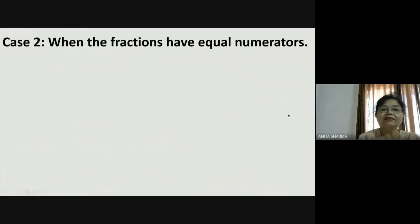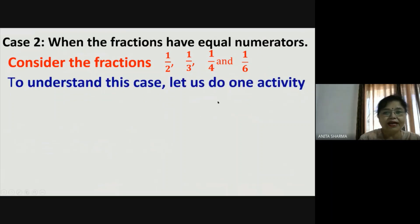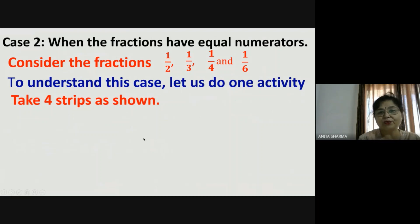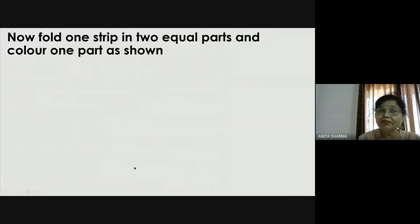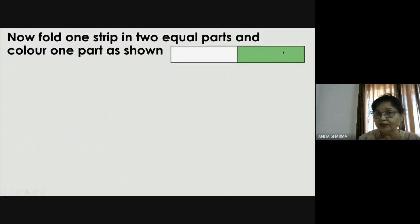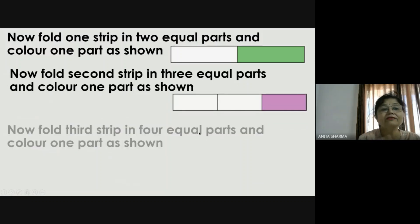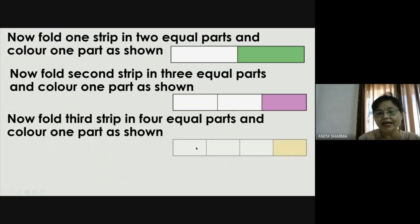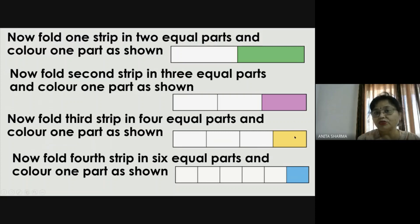Now let us understand case two — when fractions have equal numerators. Consider the fractions one half, one third, one fourth, and one sixth. To understand this case, let us do one activity. Take four rectangular strips of equal size. Fold one strip into two equal parts and color one part. Fold the second strip into three equal parts and color one part. Fold the third into four equal parts and the fourth strip into six equal parts, coloring one part each. We are considering only one part — the numerator is the same.